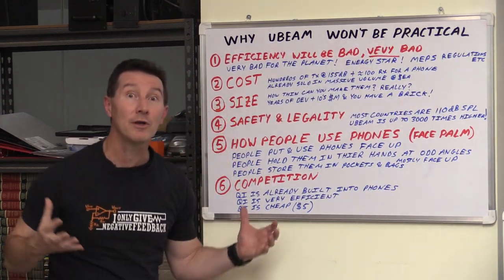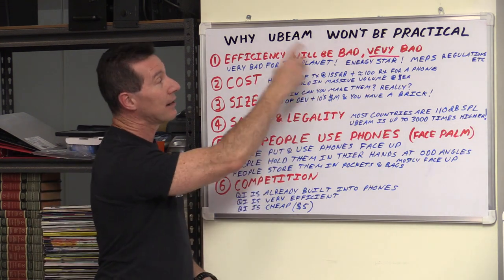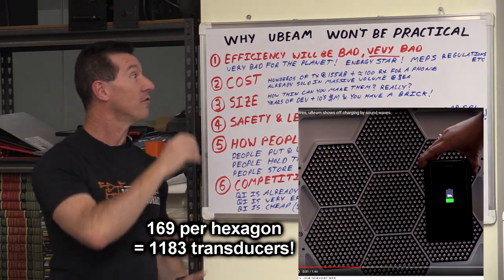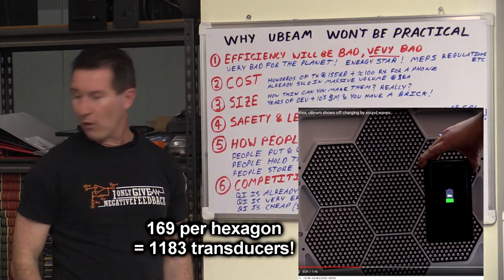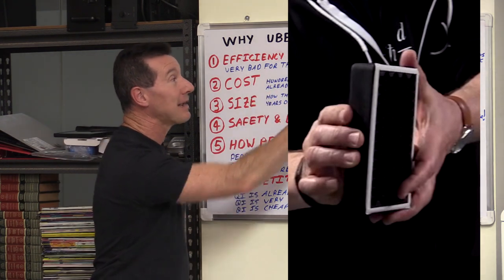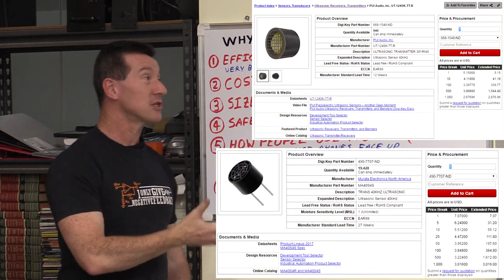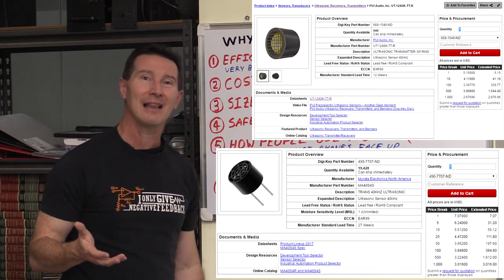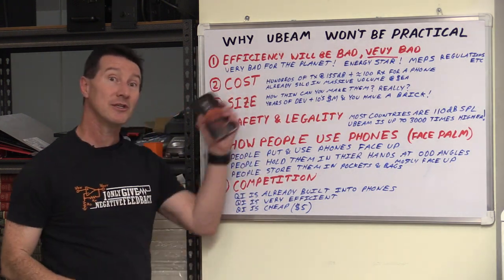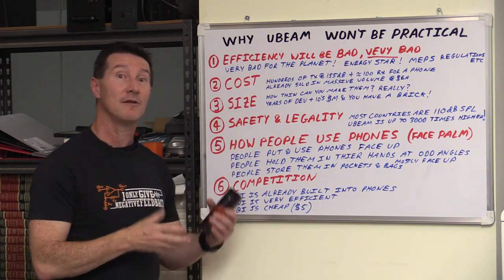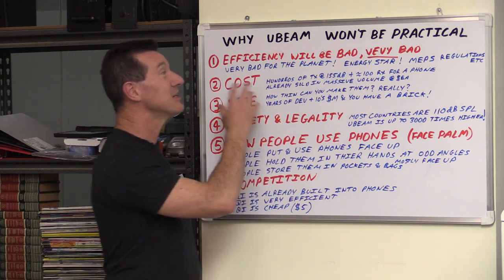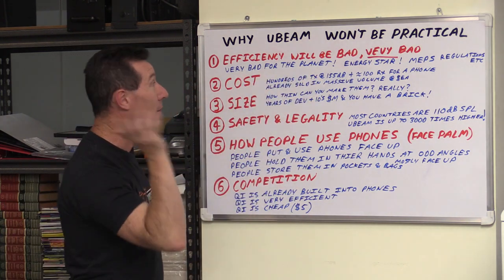Anyway, cost. The cost. You need hundreds of these transducers that can do the 145 to 155 dB SPL in this thing. And for the transmitter, hundreds and hundreds of them. And you need maybe a hundred of them for a phone size thing. We've got like a hundred of these things on the back of a phone. And these are already sold in massive volume for the automotive industry. They're several dollars each. Yeah, you might be able to pick them up on AliExpress for like 50 cents or something. But there's no way that Willy Wonka's transducer factory is going to churn out transducers of this capability and efficiency for anywhere near a practical consumer cost. It's just ridiculous. You need so many of them. And we'll compare that with the competition in a minute.